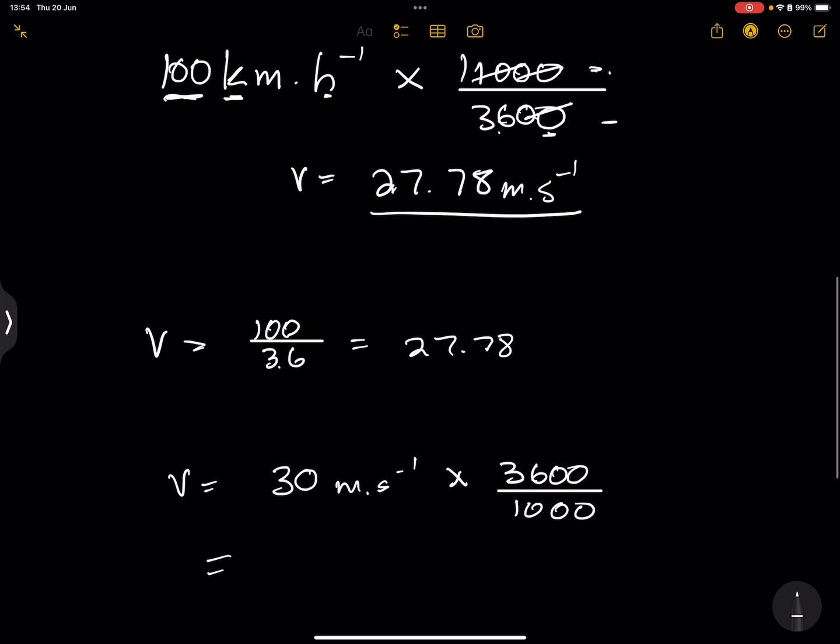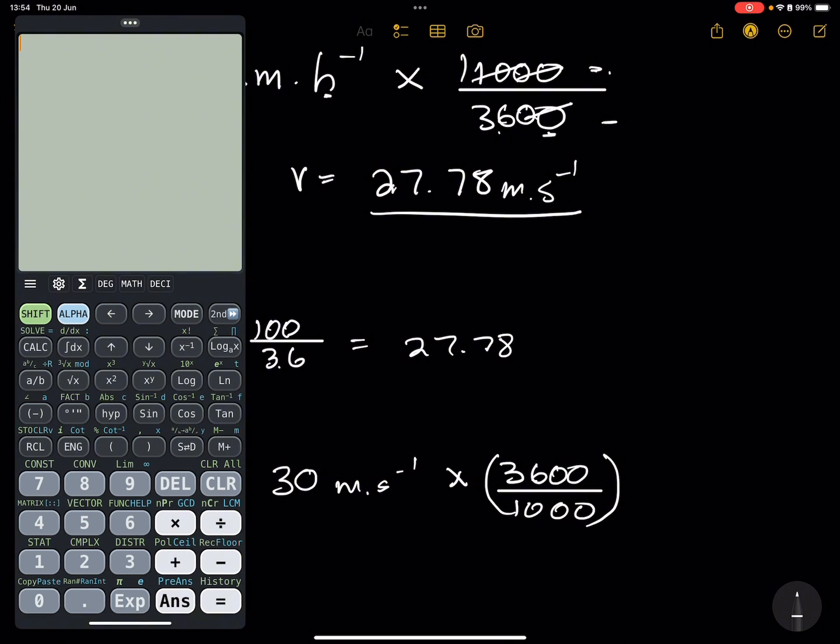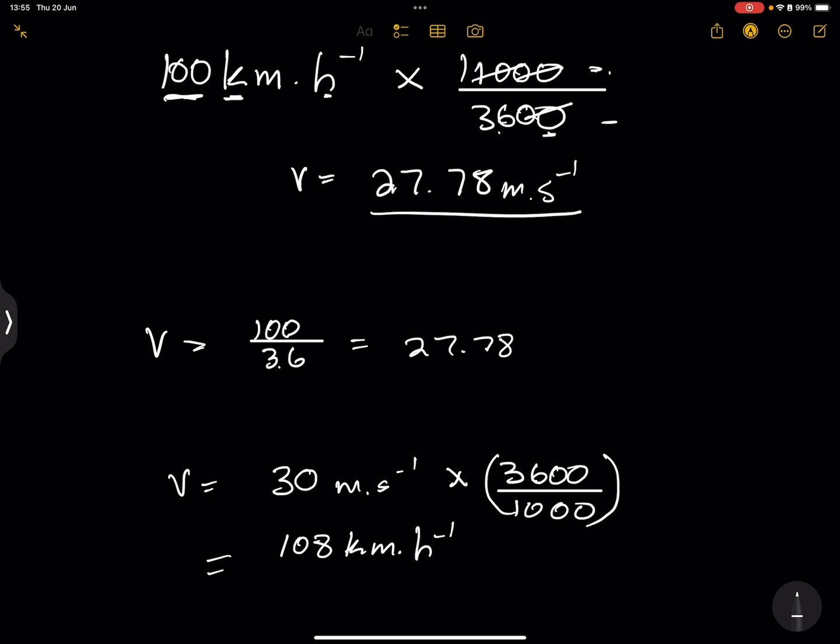But alternatively, remember, 3,600 divided by 1,000 gives us 3.6. So this is the same as just multiplying by 3.6. So I'm going to say 30 multiplied by 3.6. And you can see we get 108. And now this is in kilometers per hour. So this will be in kilometers per hour.